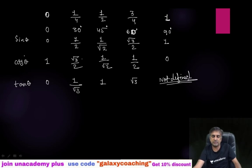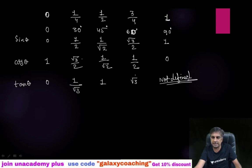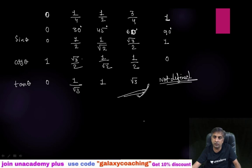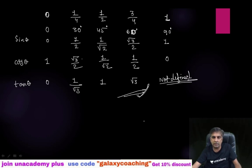This is an easy way to remember and revise the trigonometric table. The other three ratios — cosec, sec, and cot — you can find by simply taking the reciprocal of sine, cosine, and tan respectively. Thank you so much for watching. If you liked it, please subscribe to my channel and join my WhatsApp group — the link is in the description.